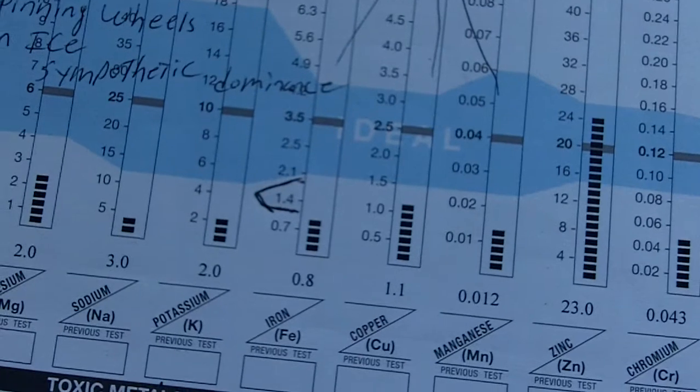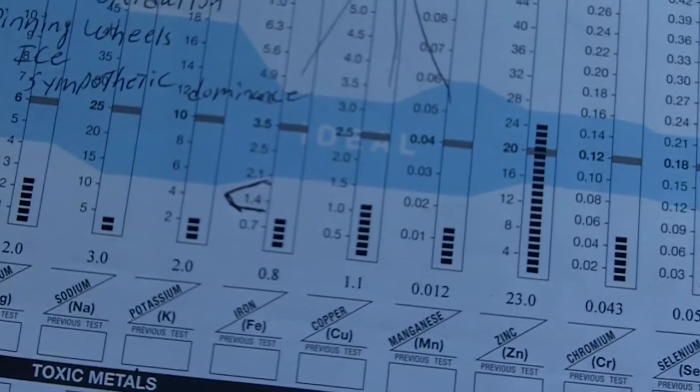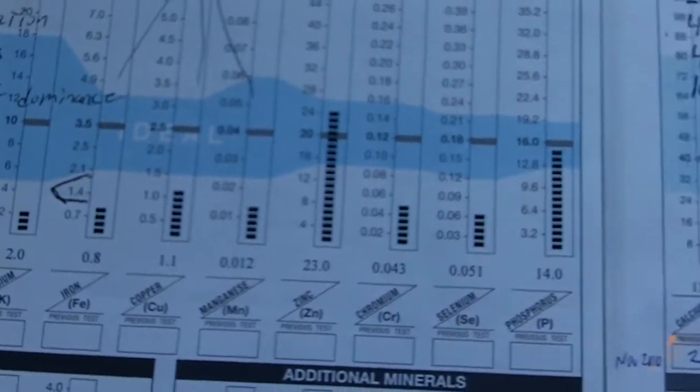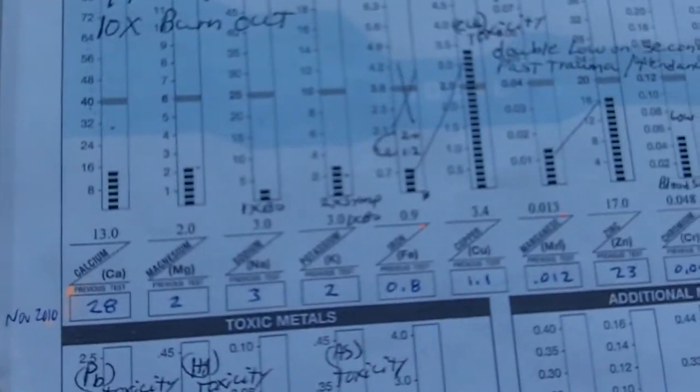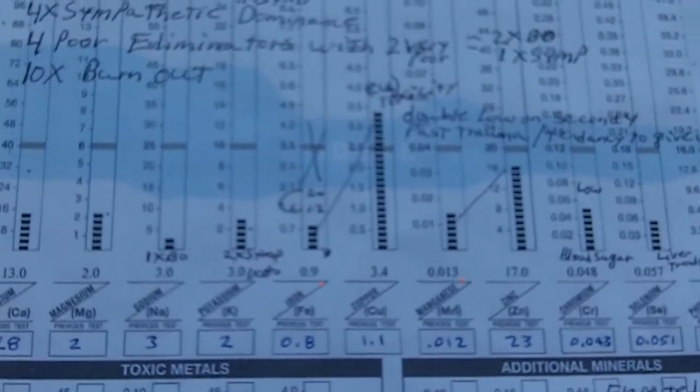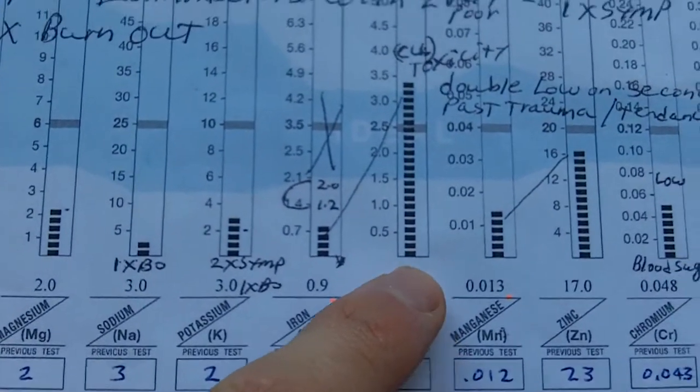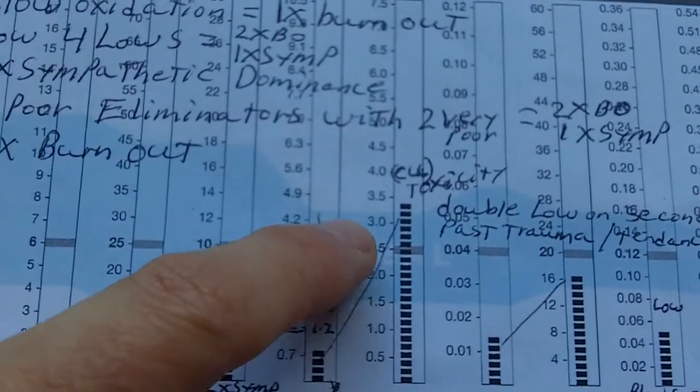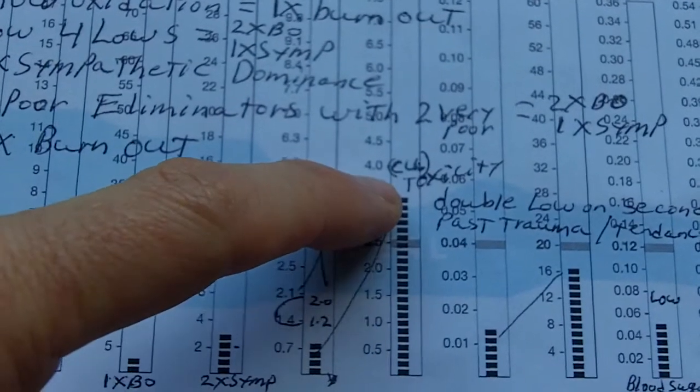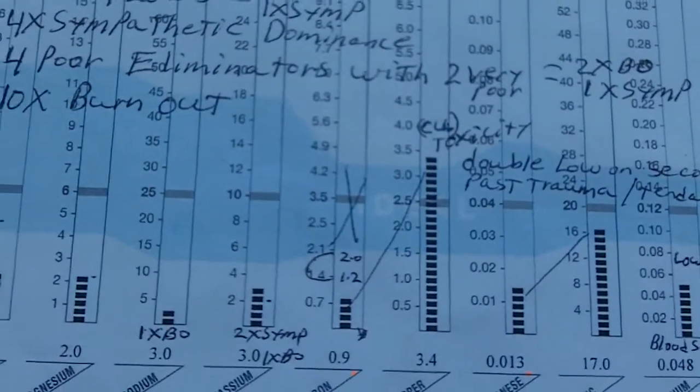The following test, this was a couple years later, there's my copper level. It's gone up from 1.1 to 3.4. This is the ideal range, and obviously it's above that.